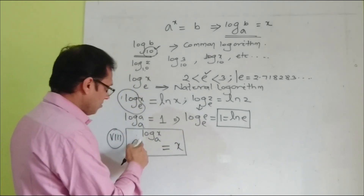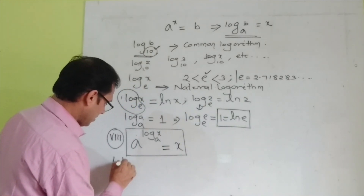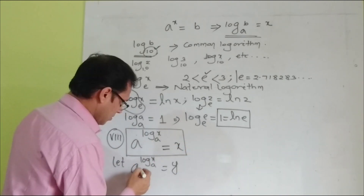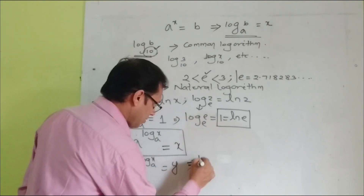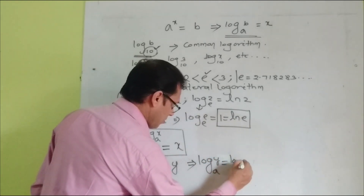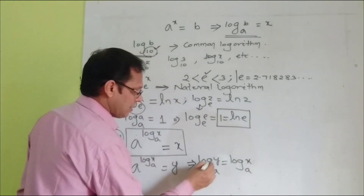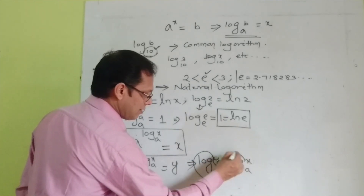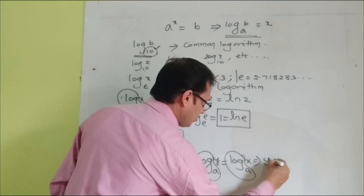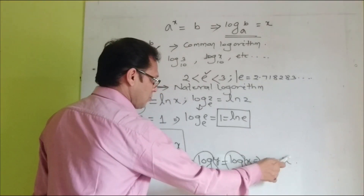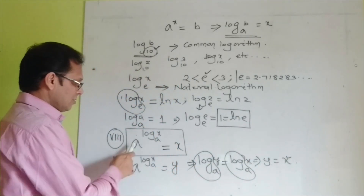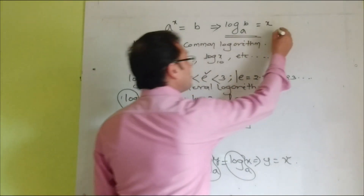For the proof, let a to the power log x to the base a equal y. Expressing this into logarithmic form: log y to the base a equals log x to the base a. Since both sides equal log x to the base a, we get y equals x. We had set the expression equal to y, so y equals x, which proves that a to the power log x to the base a equals x.